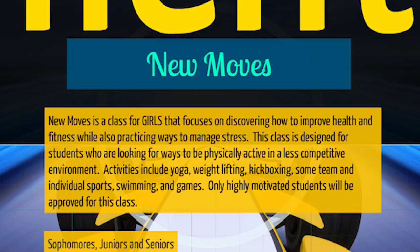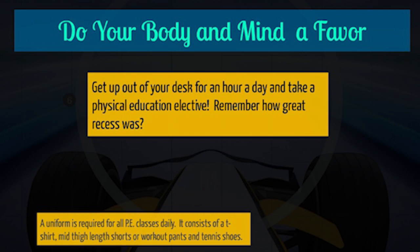A uniform is required for all PE classes daily. It consists of a t-shirt, mid-thigh length shorts or workout pants, and tennis shoes. It is not provided by the school, so you can bring that from home. Do your body and mind a favor — get up out of your desk for an hour a day and take a physical education elective!